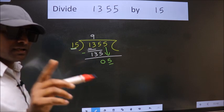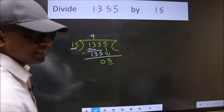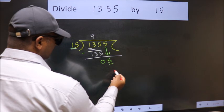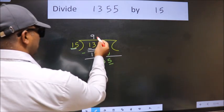Instead of that, what we should think of is which number should we take here? If I write 1 here, we get 15.